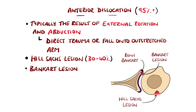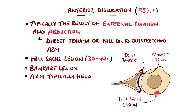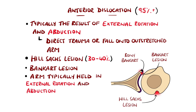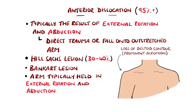The arm is typically held in external rotation with some abduction, and all movements are painful. There is a loss of the normal contour of the deltoid, and the acromion can be particularly prominent.